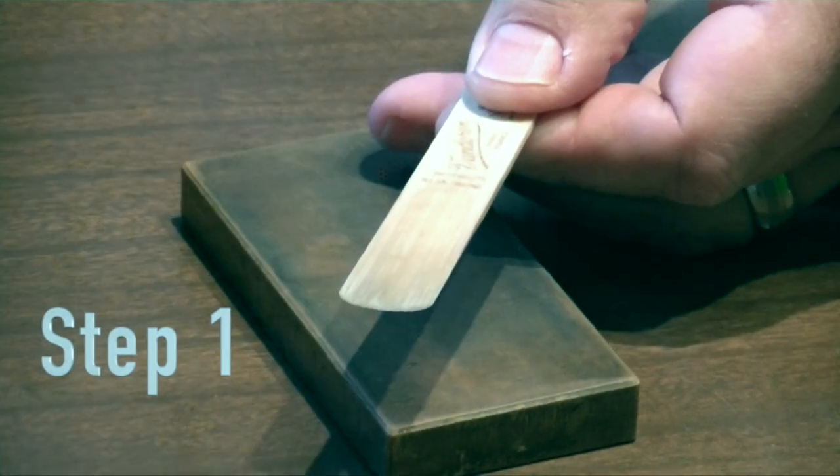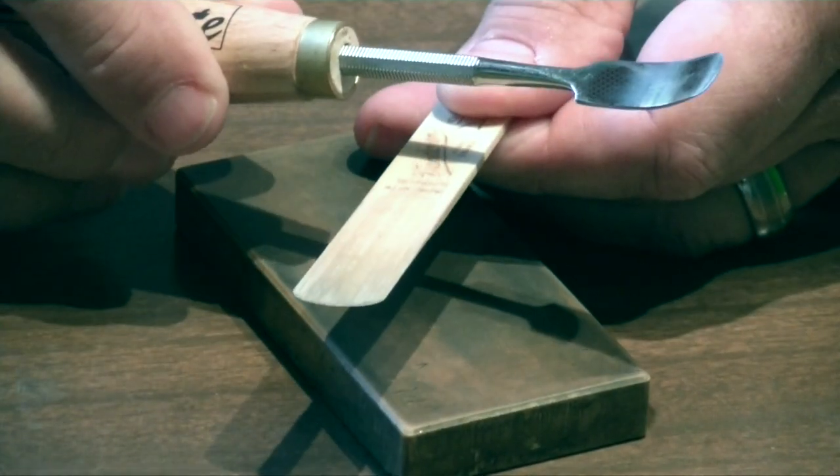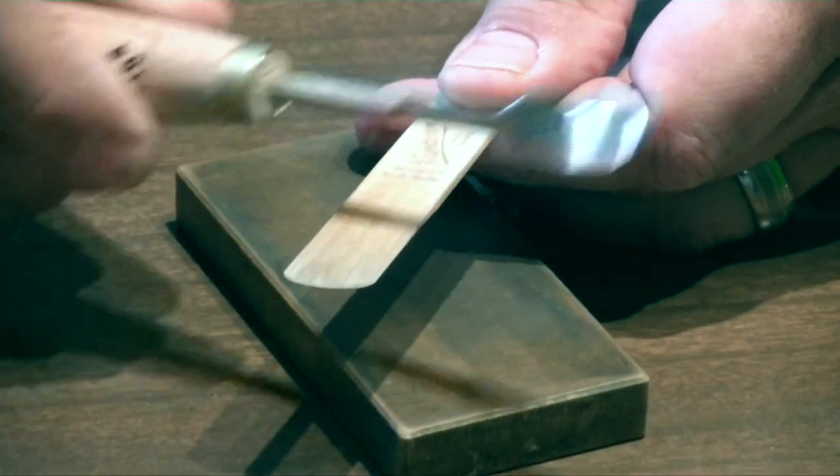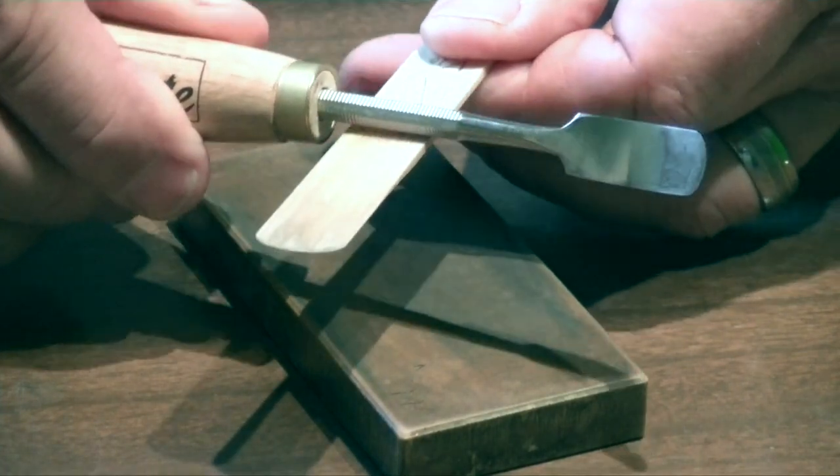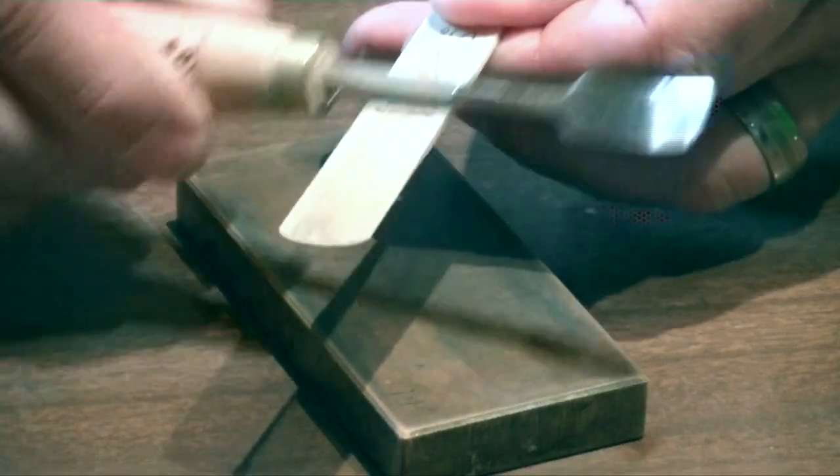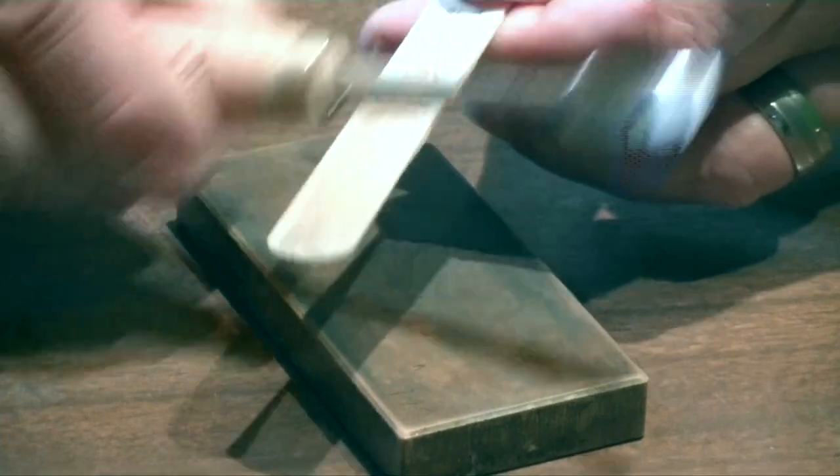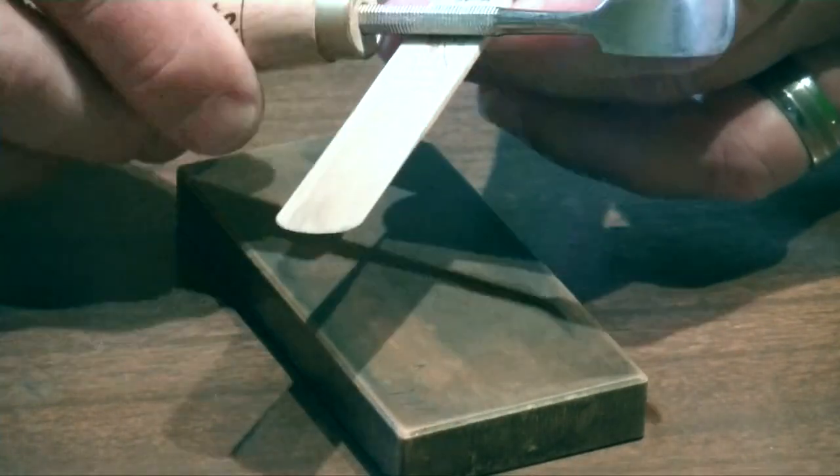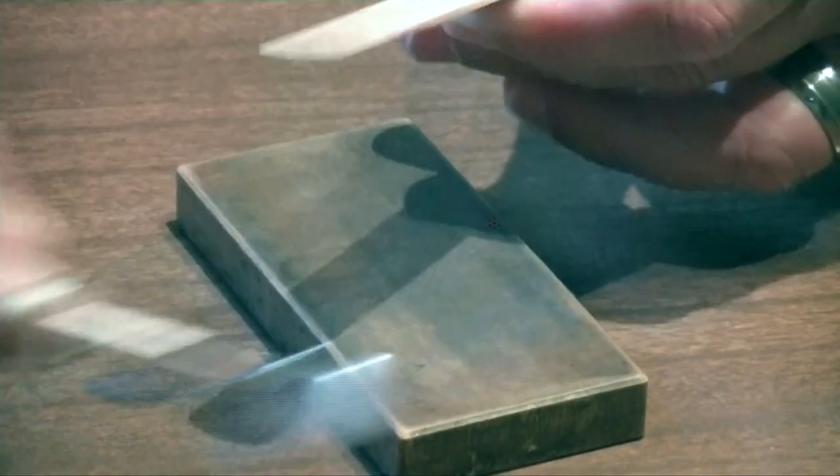Step one, we always want to make sure the reed is flat on the back. Sometimes after machining it comes off a machine with high fibers, so I take this part of the tool and just quickly rub it across the flat part of the reed which goes on the mouthpiece.